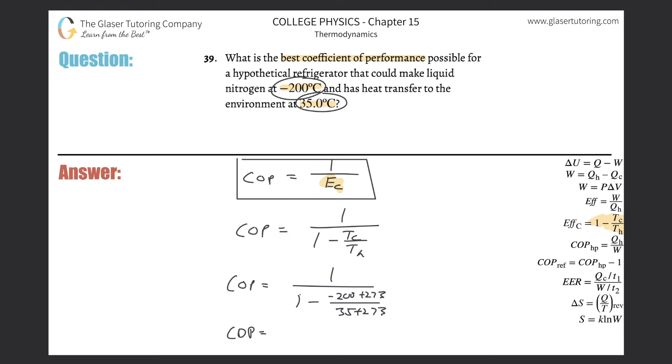One minus that answer - so the denominator is about 0.76, and then one divided by that. So this works out to be about 1.31. The coefficient of performance, the best coefficient, is about 1.31.